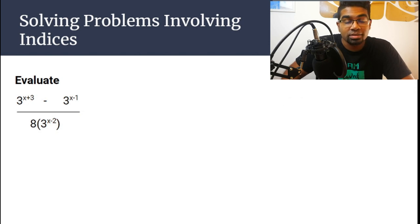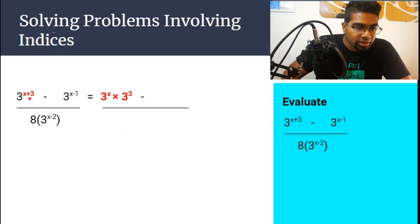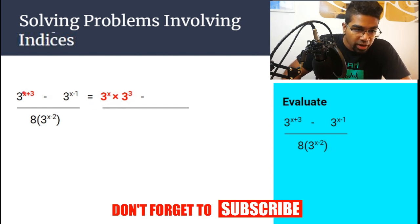The first law that we apply is when we have an index where there's an addition of index. So we have base 3 to the power of x plus 3. When there's a plus in the middle, then we can separate into two different terms. So it becomes 3 to the power of x times 3 to the power of 3. When there is an addition of the index here, 3x plus 3, we can separate into 3 to the power of x multiplied by 3 to the power of 3. Notice that the base is the same. So this is the first rule.